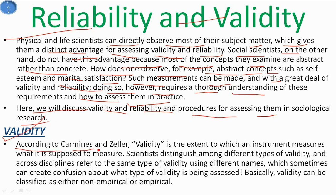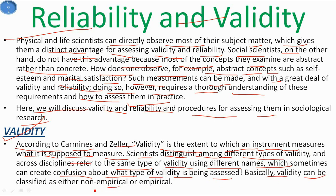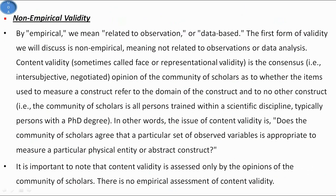According to Carmines and Zeller, validity is the extent to which an instrument measures what it is supposed to measure. Scientists distinguish among different types of validity, and across disciplines the same type of validity may be referred to by different names, which can sometimes create confusion. Validity can be classified as either non-empirical or empirical.